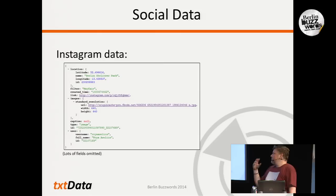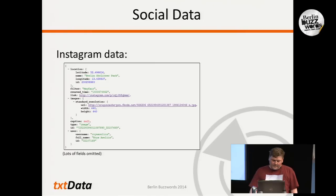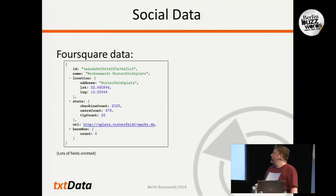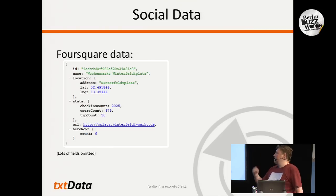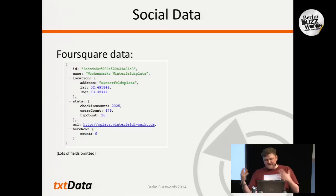Instagram gives you something similar — you also have location, timestamps, unique IDs, and the user, but the JSON structure is different. And from Foursquare, this is a trending place — the local market at Winterfeldplatz in western Berlin. It has coordinates, statistics about how many check-ins there are, from how many users, how many tips there are, a URL for the web page, and a number about how many people are there at the point when we retrieved it. This is all JSON data, so it's easy to put directly into Elasticsearch.